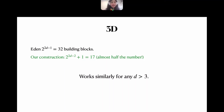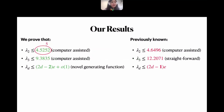We show in the paper that this construction works similarly for d greater than three. As claimed, so far I have only shown how we improved the upper bound on λ_2 to 5. So how do we obtain the new improved results?